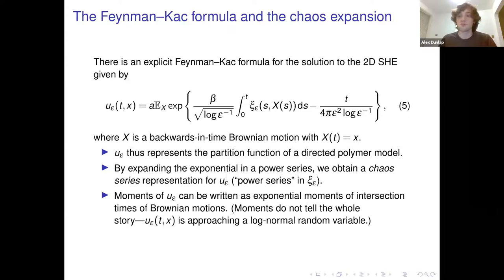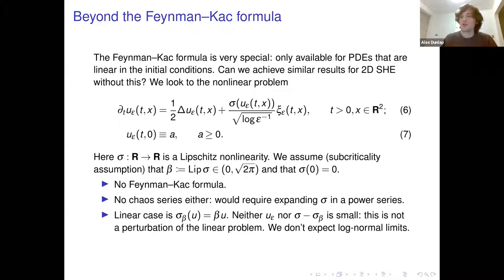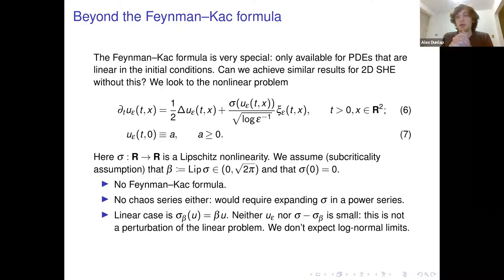The goal of our study is this: the Feynman-Kac formula is a very special object — it only makes sense for linear PDEs. Our question was: how can we develop tools that work in more nonlinear settings where we don't have this explicit formula for the solution?